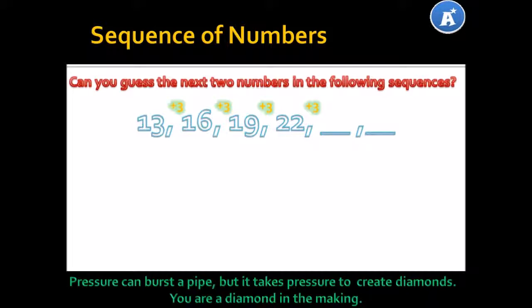Good job. So then, my new number is 25. And how can I get the next number in the sequence? Simply add 3 again. So I'll get 28. There you go.